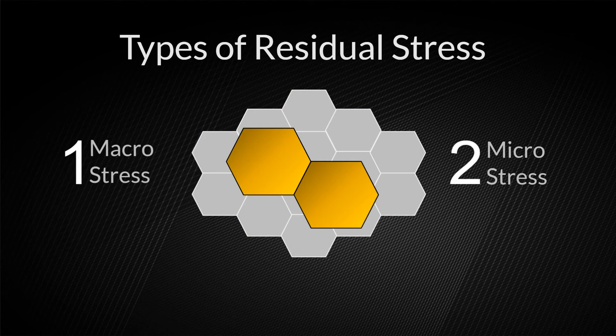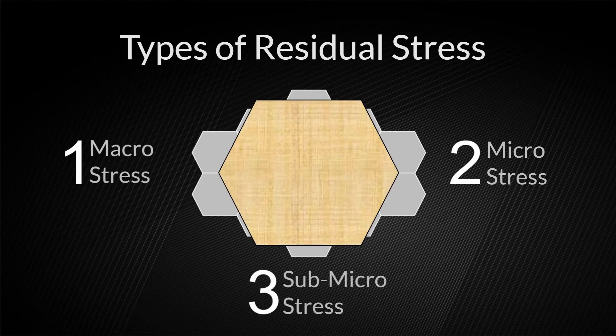is the residual stress between grains. Variations may result from different phases in the material. Type 3, sub-micro, is the residual stress within one grain. Variations may result from dislocations or crystalline defects.